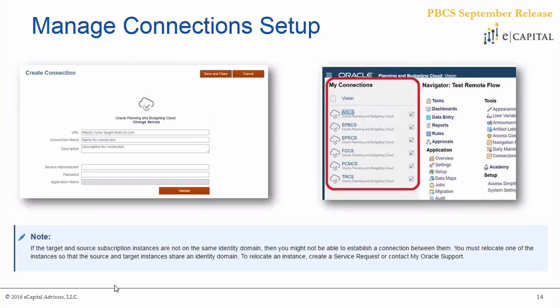Once you select the connection type, you'll be prompted to fill out some information — similar to creating a data source on-prem. There's even a validation step with an administrator username and password for that connection type. Once you successfully validate and create the connection, you can connect to all the different connections you've created right within your PBCS cloud application. This is step one, and step two is the ability to create those custom navigation flows.